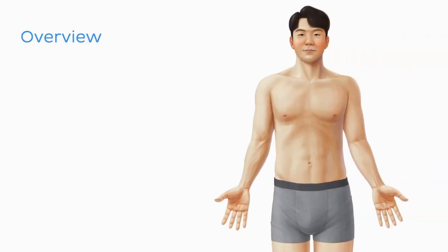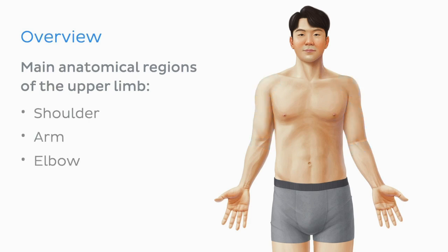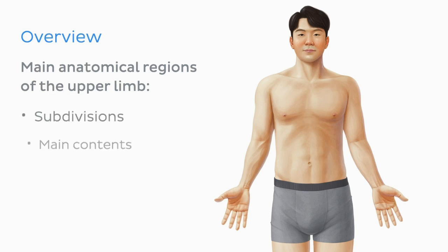During this tutorial, we're going to review the main anatomical regions of the upper limb, or extremity. We will take a look at the important terms related to the shoulder, the arm, the elbow, the forearm, and the hand. As we go through, we will take a deeper look at the subdivisions, main contents, and boundaries of these regions.